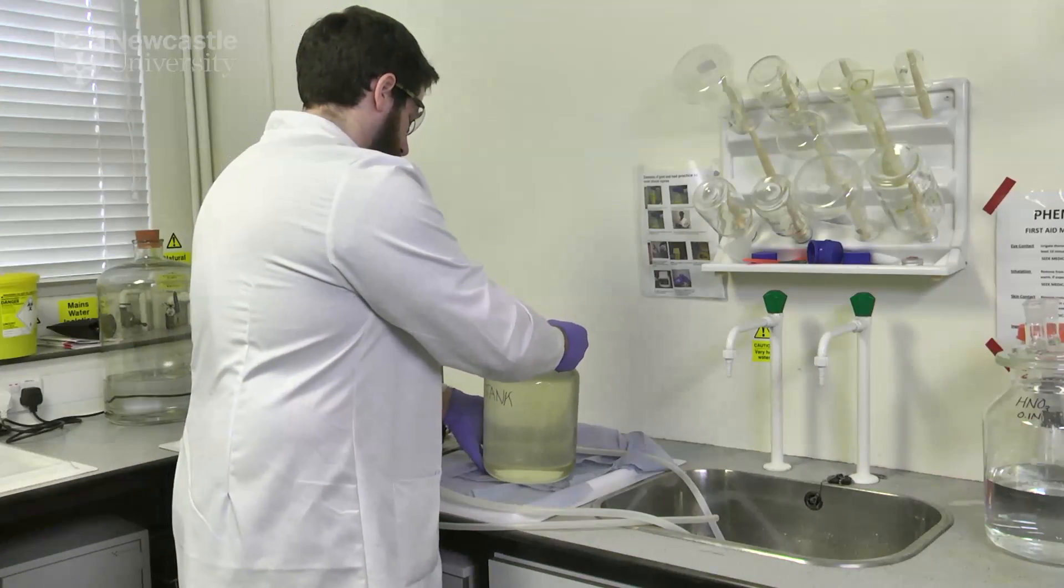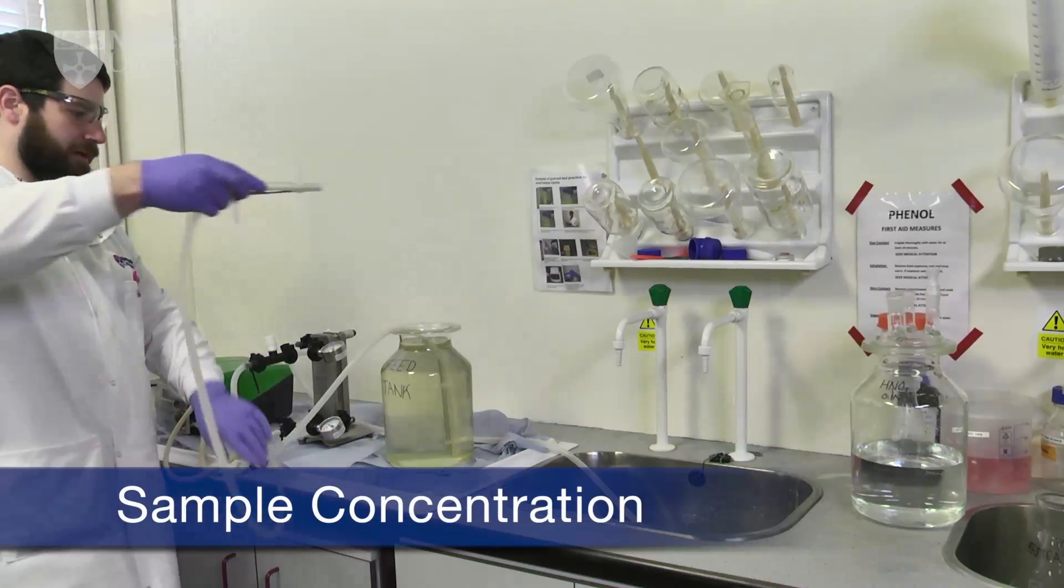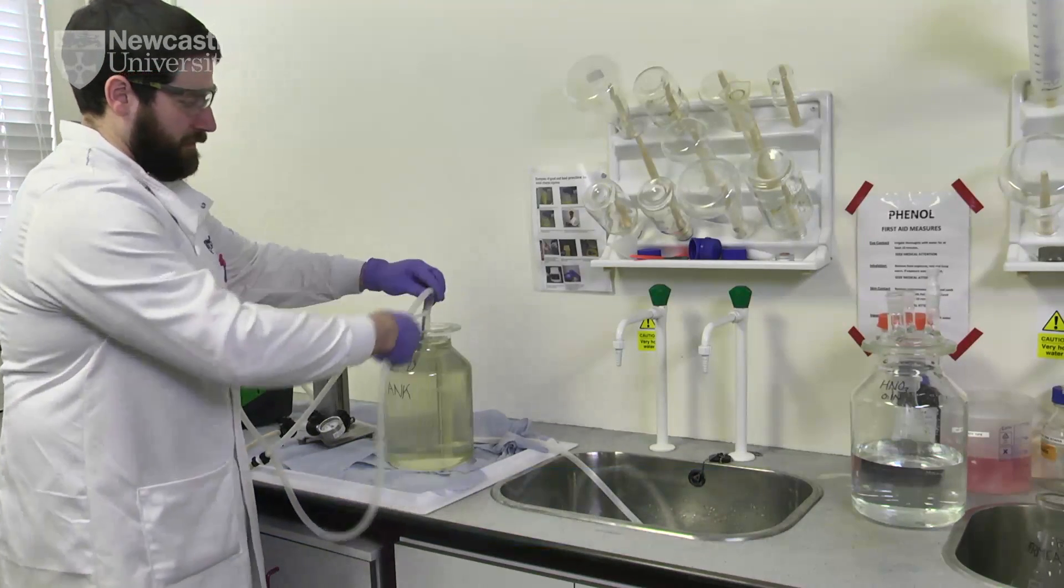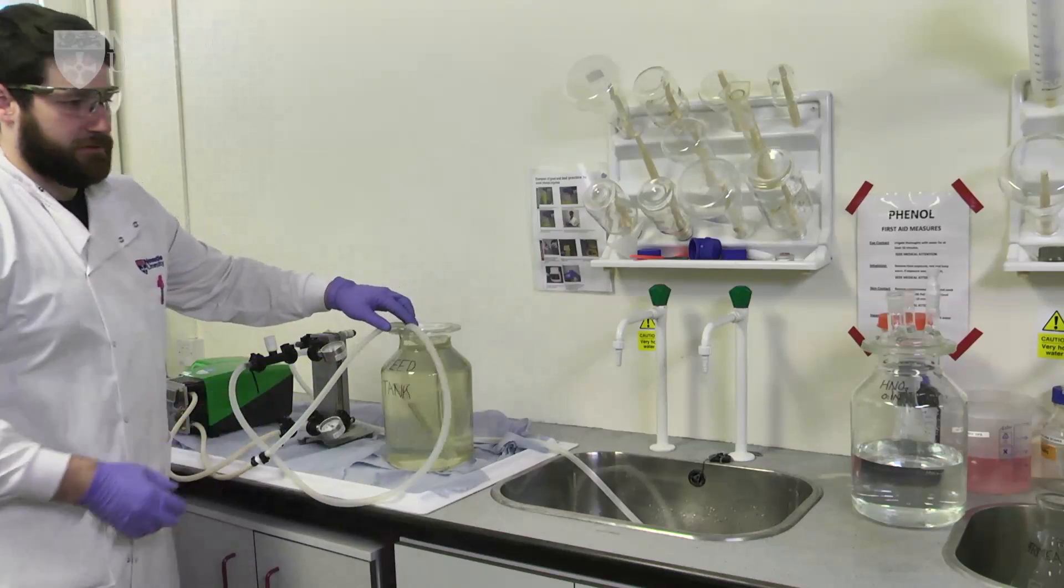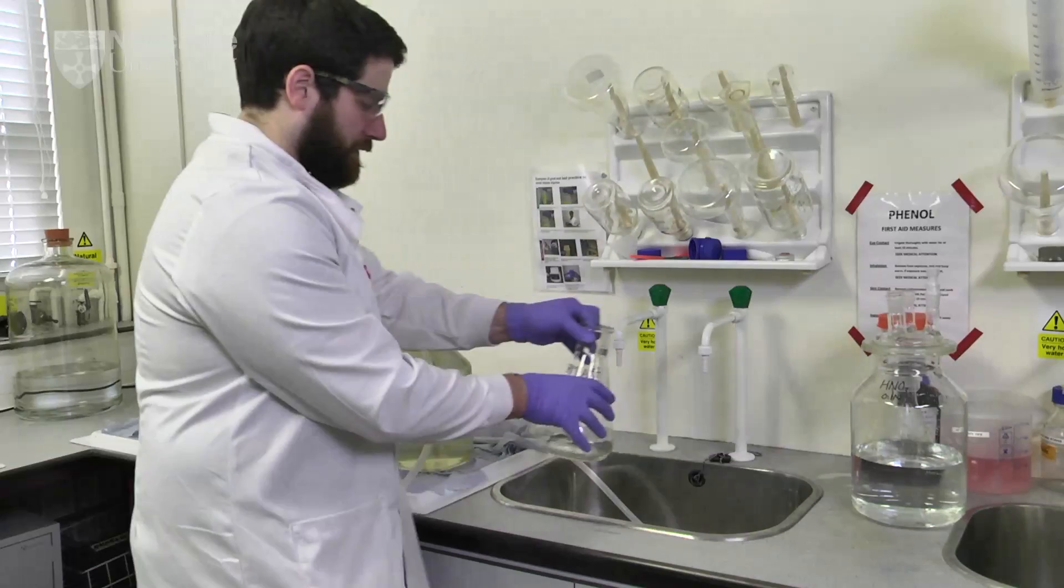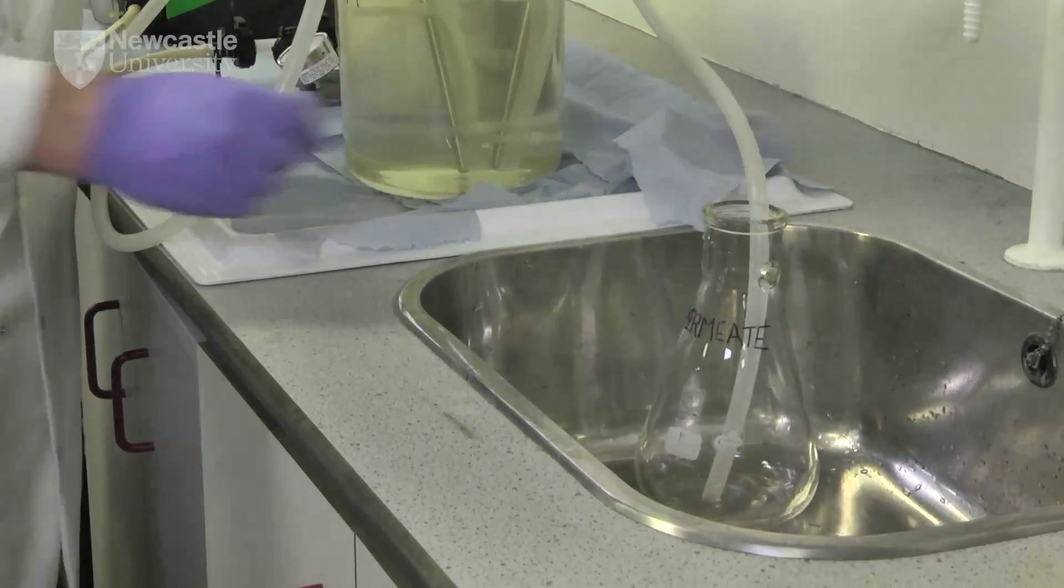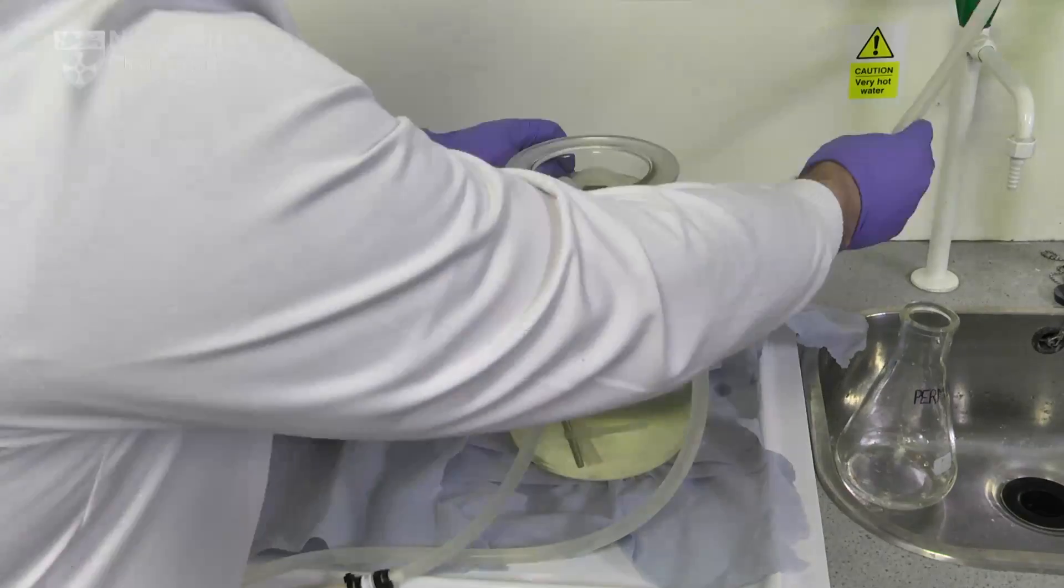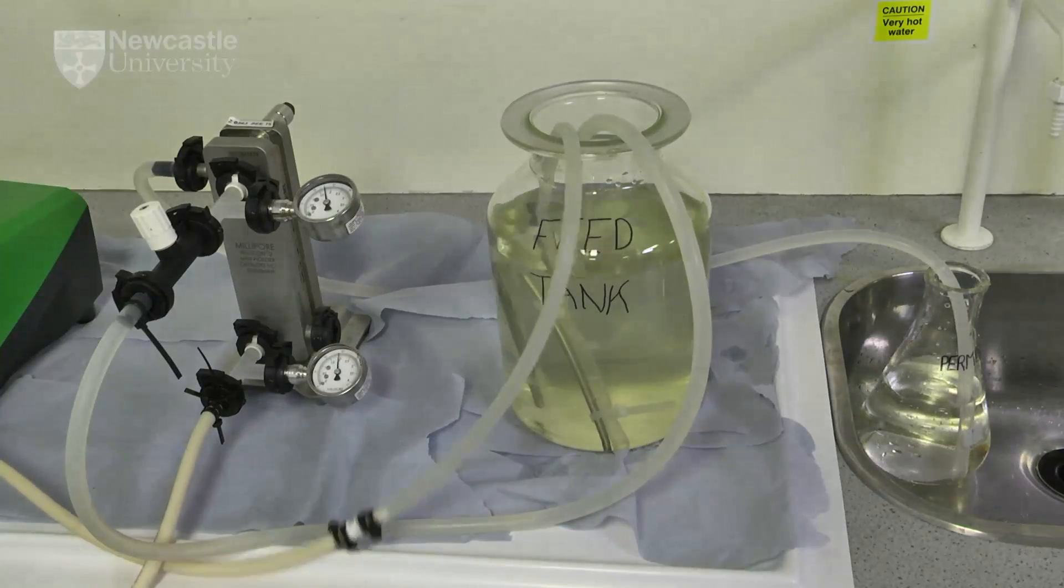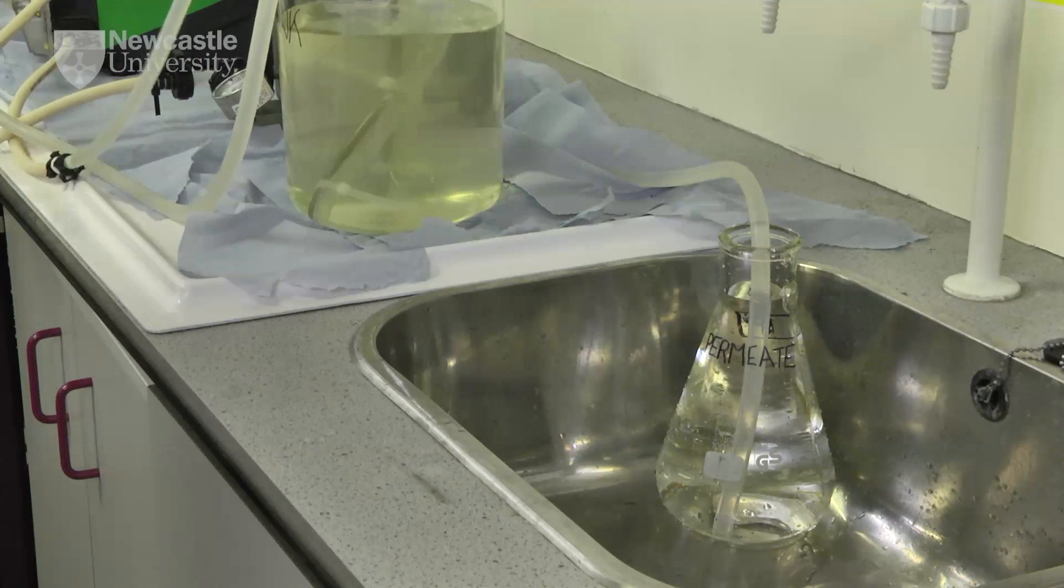To begin the concentration procedure, the feed and retentate lines are placed in the feed tank. The permeate line is placed in a permeate collection vessel which can be allowed to overflow and drain. The feed and retentate pressure can be changed by adjusting the pump speed and retentate valve and monitored on the feed and retentate pressure gauges.